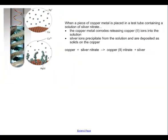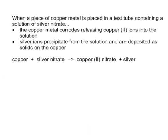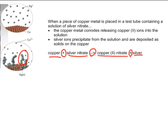Here's another example: a piece of copper metal put into a test tube containing silver nitrate. The copper metal corrodes, releasing copper(II) ions into solution; silver ions precipitate and are deposited as solid silver. Written as a word equation: copper plus silver nitrate produces copper(II) nitrate and silver.